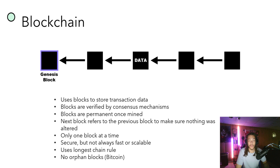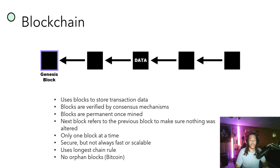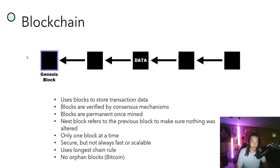Blocks are permanent once mined — there's no un-mining or replacing a block. Each next block refers to the previous block to make sure nothing was altered. More technically, each block refers to the previous block's header, which contains all the information in a hash, verifying the lineage back to the genesis block. Only one block can be mined at a time. Blockchains are secure but not always fast or scalable. Bitcoin, for example, is very secure with a globally distributed network, but it is not very fast or scalable.